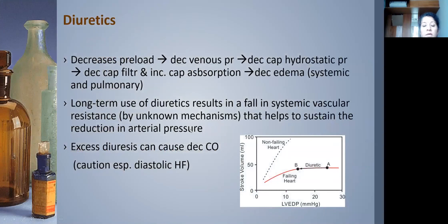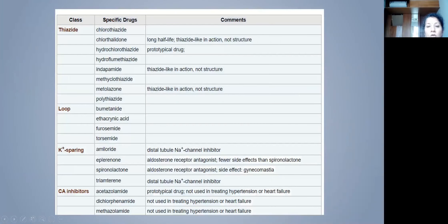Common diuretics: thiazides include chlorothiazide, hydrochlorothiazide, and metolazone. Loop diuretics: furosemide is most common; torsemide is a newer option. Potassium-sparing: amiloride, eplerenone, and spironolactone. Torsemide is more potent — 10 mg of torsemide equals 40 mg of furosemide — with longer duration, higher bioavailability, and greater effectiveness in heart failure, though expensive. Metolazone is 10 times more potent than regular thiazides and useful in resistant heart failure cases.